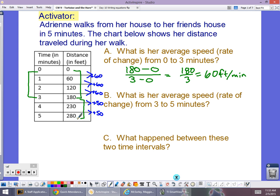What's your average speed from three to five? So same thing. We're going to go here and say 280 minus 180 over five minus three. What is our difference there? It looks like 100. And then divided by two, looks like 50 feet per minute is our average there. And it makes sense, right?